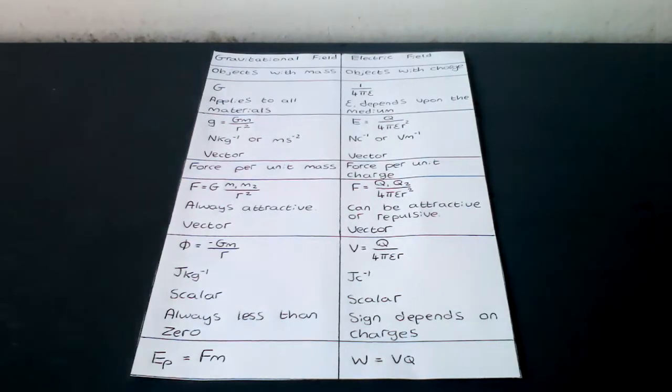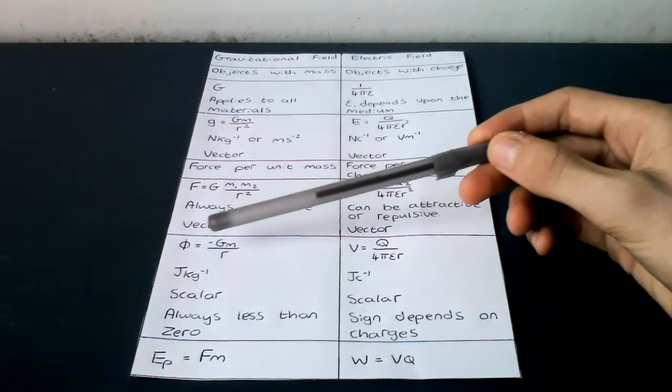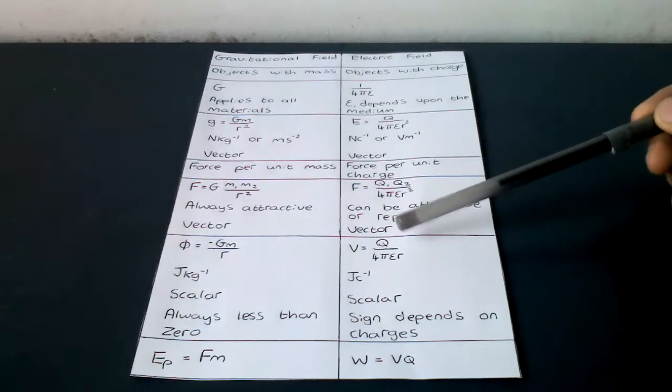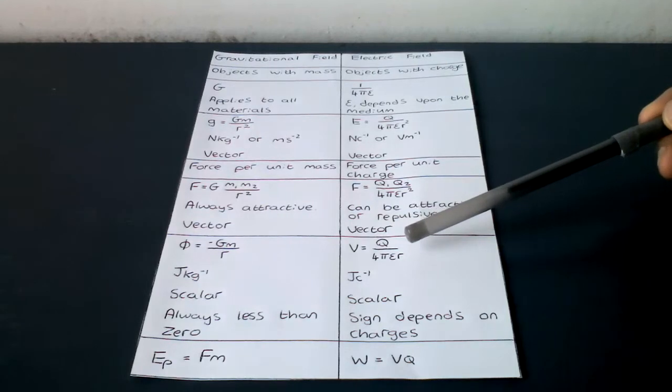And then potential in a radial field: psi equals minus g times m over r, v equals q over 4 pi times epsilon r.